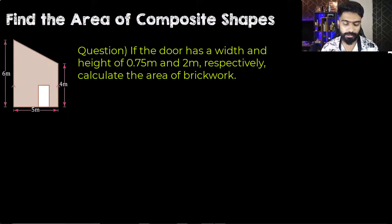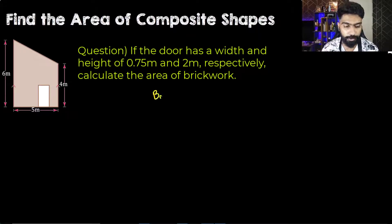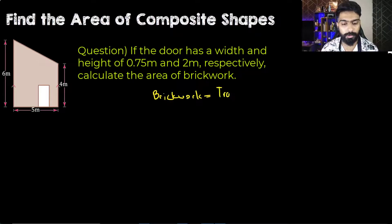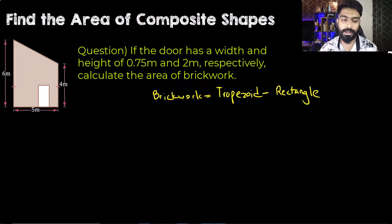First of all, let's see what we have here. This is the end view of a house which is in the shape of a trapezoid, and we have a door which is in the shape of a rectangle. The area of the brickwork will be equal to the area of the trapezoid minus the area of the rectangle, because the trapezoid is the shape of the wall and the door is a rectangle.